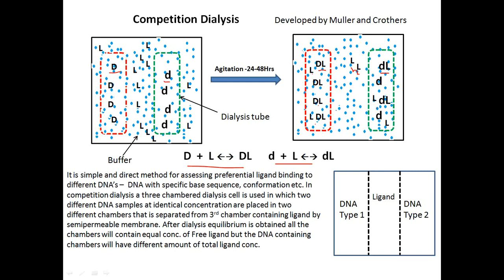The free ligand concentration (cf) is the same in both tubes, but the total ligand concentration (ct) differs between the two DNA-containing tubes. From ct and cf, the bound concentration cb is calculated, and from cb the binding constant and r values are determined. The binding constant for the DNA in the tube with more bound ligand is greater. This is a simple and direct method of assessing preferential binding — determining which type of DNA the ligand binds to and the strength of binding.